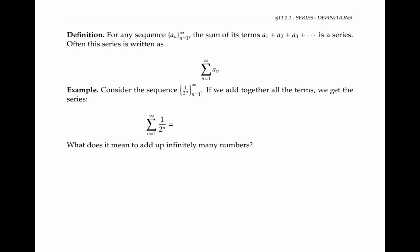Let's look at the sequence one over two to the n, for n equals one to infinity. If we add together all the terms, we get the series: the sum from n equals one to infinity of one over two to the n. That is, one half plus one fourth plus one eighth plus one sixteenth plus one thirty-second, and so on.